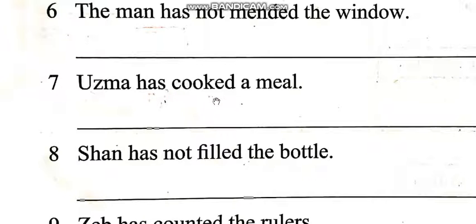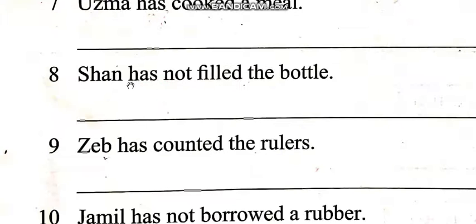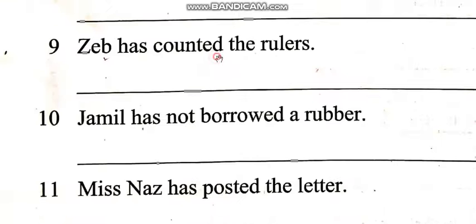Usma has cooked a meal. Has Usma cooked a meal? Yes, she has. Shana has not filled the bottle. Has Shana filled the bottle? No, he hasn't. Zeb has counted the rollers. Has Zeb counted the rollers? Yes, she has.